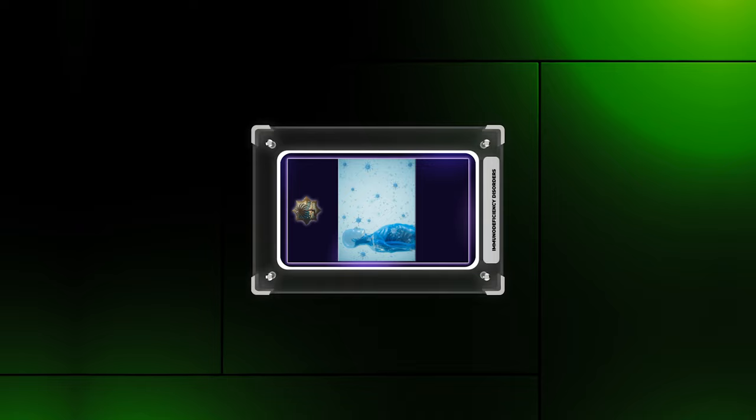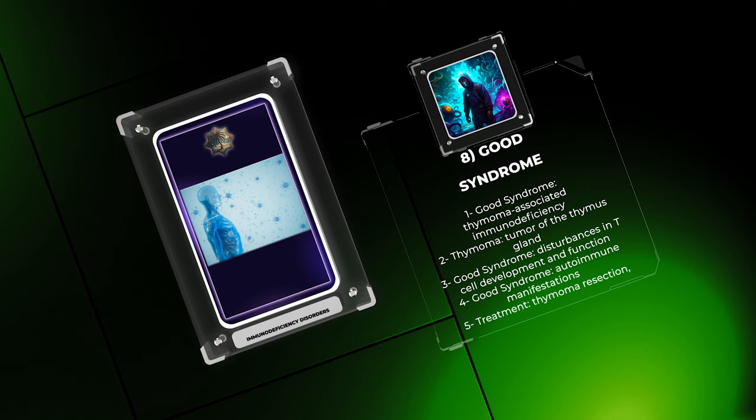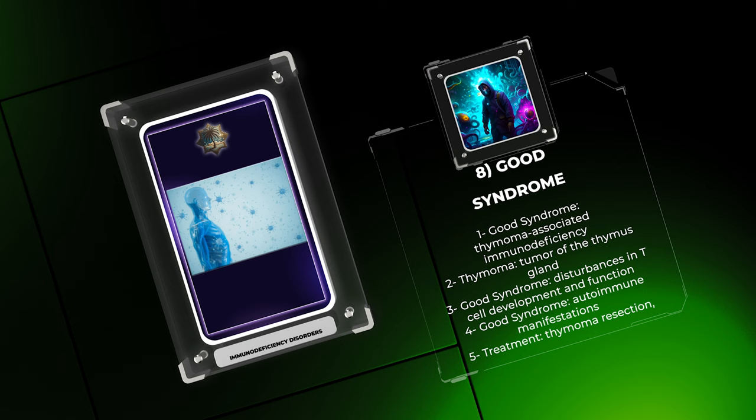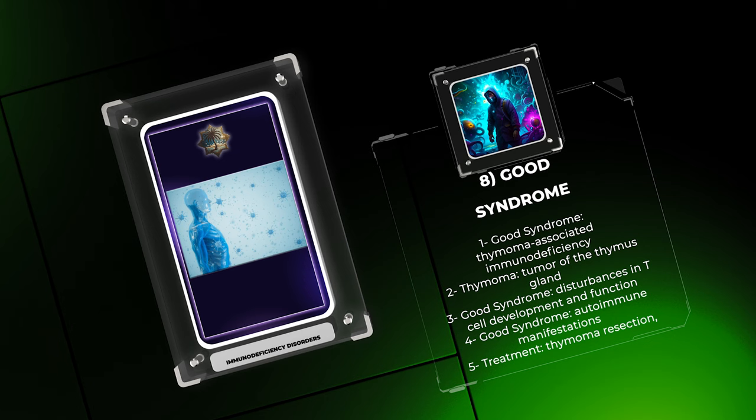Good syndrome, also known as thymoma-associated immunodeficiency, is an acquired immunodeficiency disorder typically associated with thymoma, a tumor of the thymus gland. The exact pathogenesis of Good syndrome is not completely understood; however, thymoma-associated disturbances in T-cell development and function play a significant role.